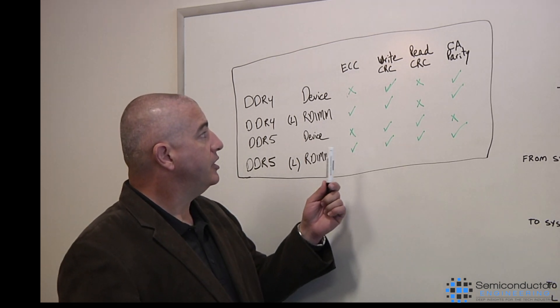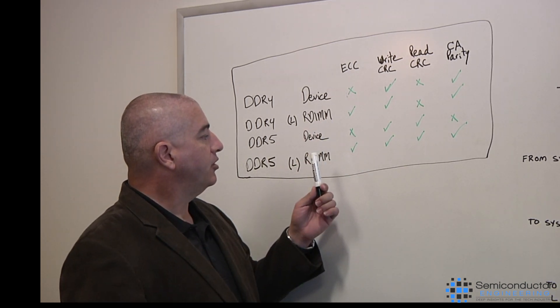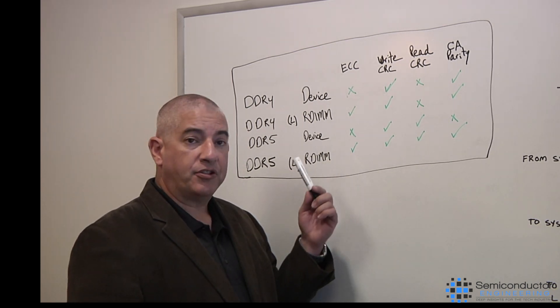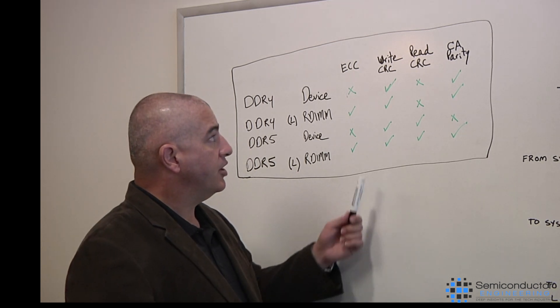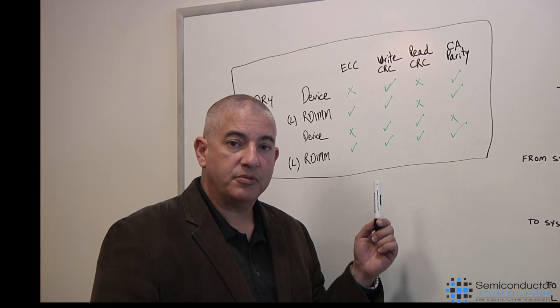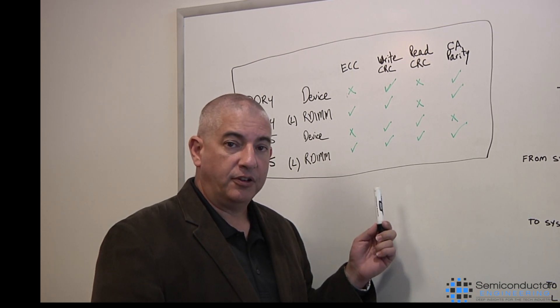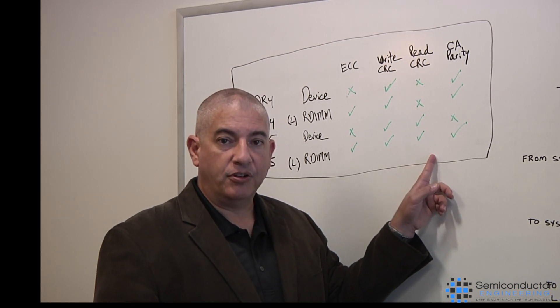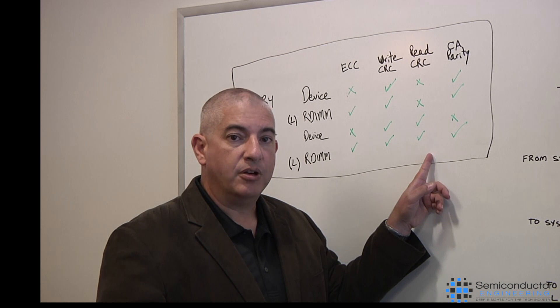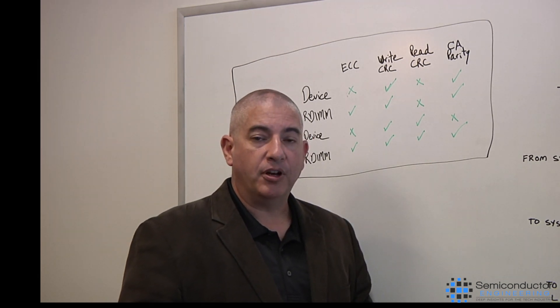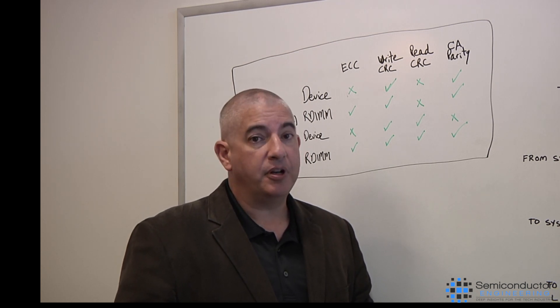As an example, if we look at ECC, ECC is really relevant for things that are on a DIM, a UDIM, RDIM, LRDIM. Not so relevant for the actual devices themselves. If we look at WRITE CRC, this is available in all things up here, both DDR4 devices and DIMs, as well as DDR5 devices and DIMs. When I go to READ CRC, you can see that DDR5 has introduced this new feature to help with enhanced reliability with the new standard. And then finally, we'll talk about CA parity. It's available in both DDR4 DIMs and devices, DDR5 DIMs, but not DDR5 devices.